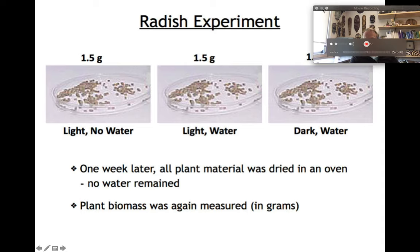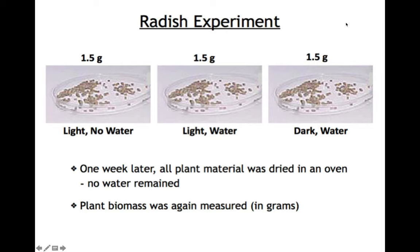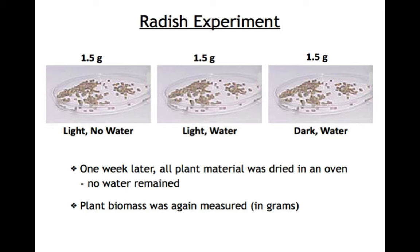We're going to start with this experiment and form a hypothesis. We have radish seeds set in three different petri dishes — all weighing exactly 1.5 grams each. This set was exposed to light and no water, this set to light and water, and this set to dark and water. One week later, all plant material was dried in an oven and weighed, leaving us with plant biomass.